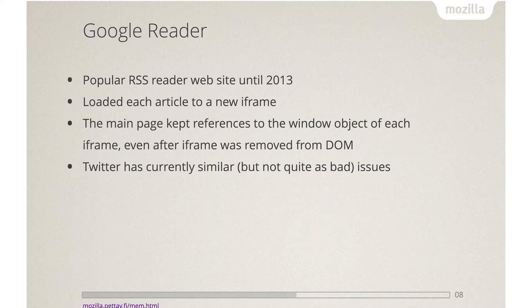I have a couple of examples. Google Reader is my canonical case — it was leaking everything. About five years ago my manager was complaining that Google Reader was getting really chunky after a while. Google Reader loaded every single article into a new iframe. Once you had read that article it removed the iframe but kept a reference to the inner window object in some array. So it basically kept everything alive. We had to add tricks in the cycle collector to take these kinds of objects away from the collector's graph so we don't need to traverse all that memory all the time, and it worked quite well. Luckily there's no Google Reader anymore.